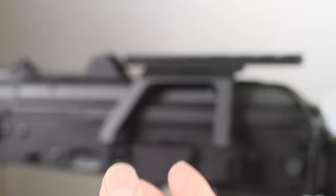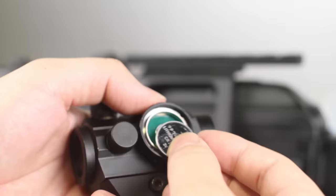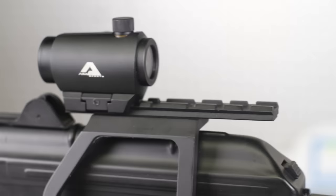For an optic, we're going with the AIM Sports 1x 20mm micro red dot. Five levels of brightness for both red and green. It's the same one that I use on my personal build, and I've been really happy with it so far. It's not a fancy optic by any means, but I've had no issues with it, and it's a strong metal build as well.